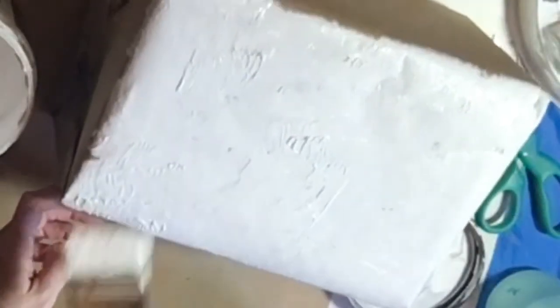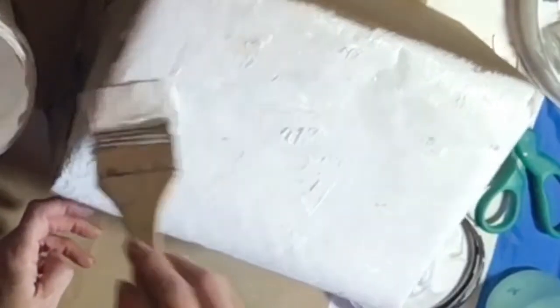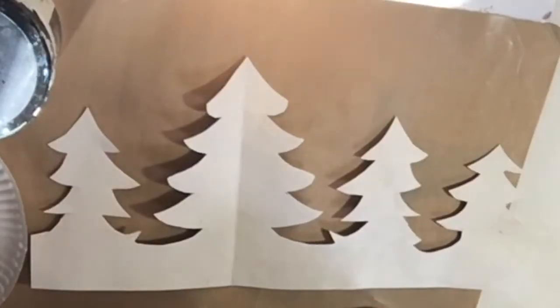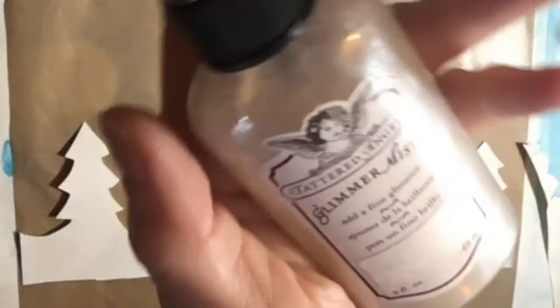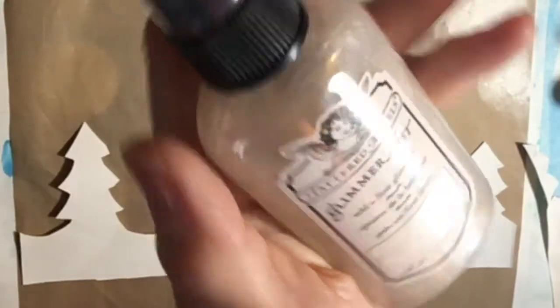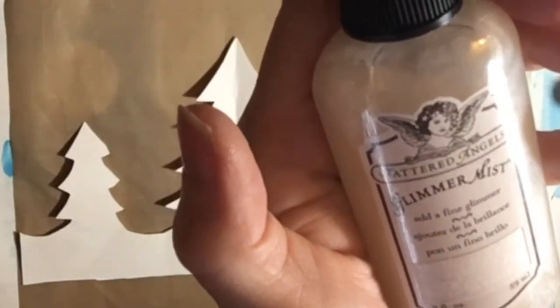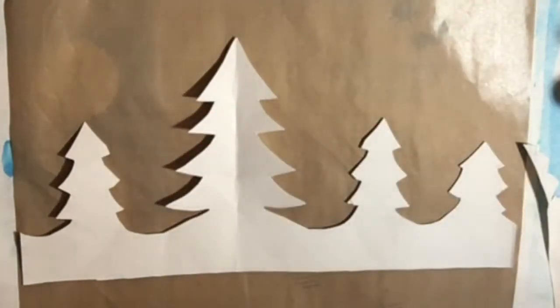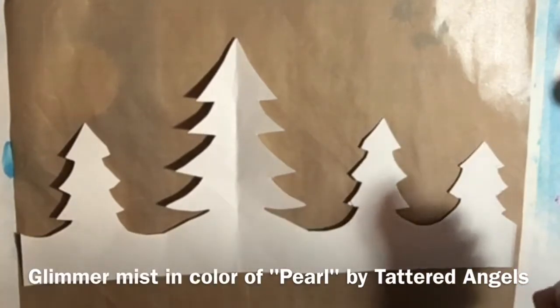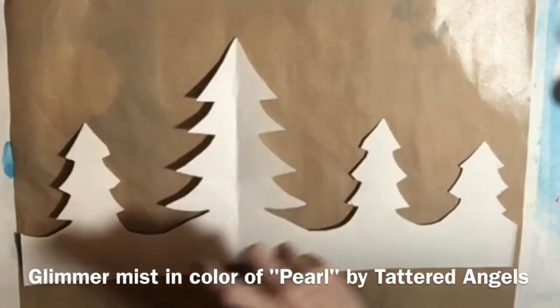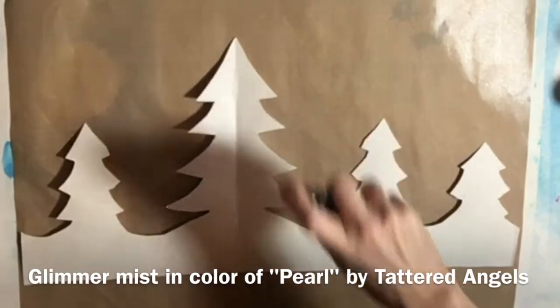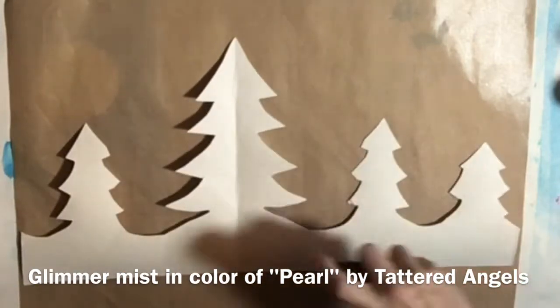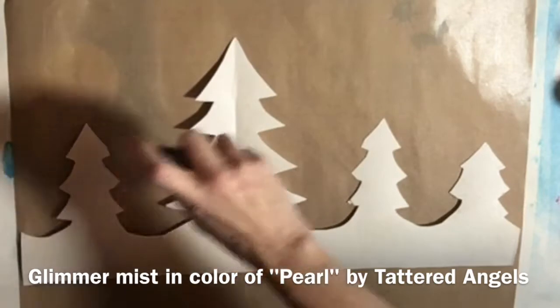And then I'm using white acrylic paint there. And now I've laid down the tree design and I'm about to spray it with this Tattered Angels brand, a glimmer mist in the color of pearl. And it does create a glimmer. So I'm spraying it on right now.